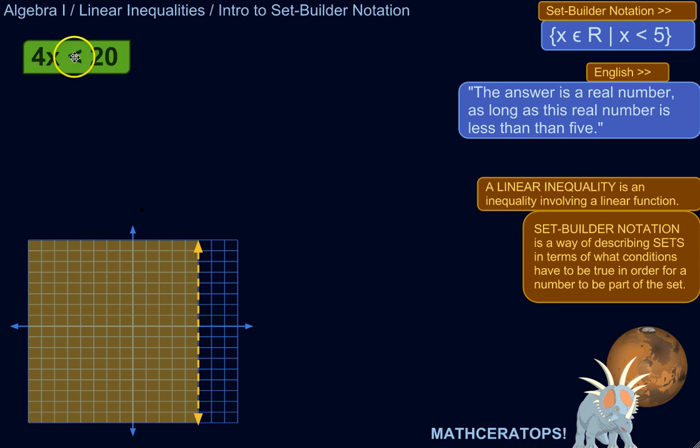So let's look at this simple linear inequality: 4x is less than 20. We could solve that. You solve it just like an equation, with the exception that if you happen to divide or multiply both sides of the inequality by a negative number, you have to switch the direction of the sign. In this case, we're okay. We're not doing anything with any negative numbers here. So we're going to get x by itself. It's being multiplied by 4, so we're going to divide by 4. So we have to do that to the other side as well. So we've got x is less than 20 divided by 4 is 5.